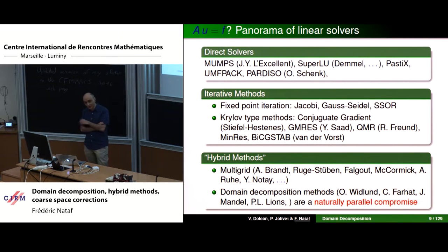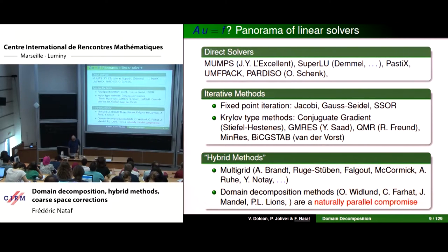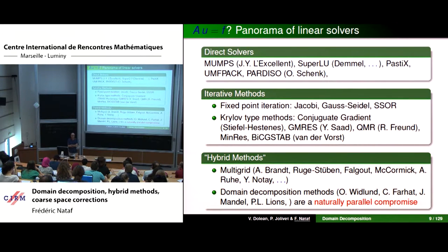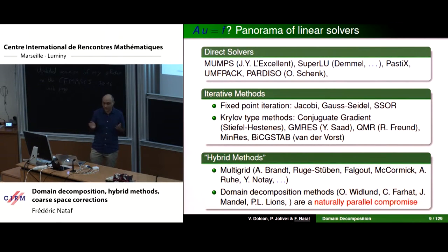I will focus on linear solvers, mainly domain decomposition methods, but first a few words about other available solvers. Direct solvers such as LU or Cholesky factorization include libraries like MUMPS (developed in France by Jean-Yves L'Excellent), SuperLU in the US, PaStiX in France, UMF Pack, and Pardiso by Olaf Schenk in Switzerland — also available through Intel's MKL. The great advantage of direct solvers is that they are very easy to use, very robust, and if they are sufficient for your problem, you should stay with them.